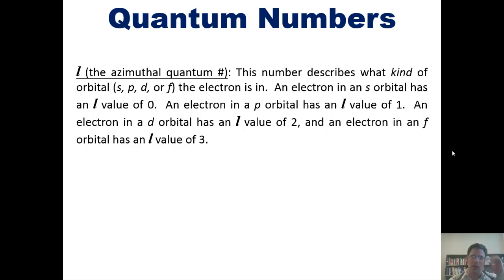An electron in an s orbital has an L value of 0. An electron in a p orbital has an L value of 1. An electron in a d orbital has an L value of 2. And an electron in an f orbital has an L value of 3, as I've summarized right here. So, please make sure that you memorize that if L is 0, the orbital you're talking about is an s. If it's 1,